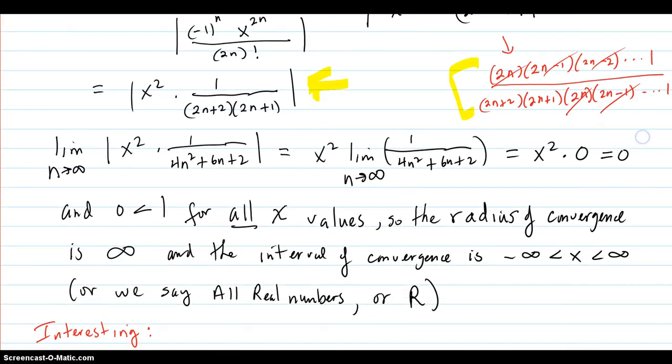We come down here. Take the limit as n goes to infinity. Of this, of course, the x squared is positive in any way, or zero, and factors out. And then you just have this limit. And that, of course, goes to zero. So x squared times zero, which is zero.